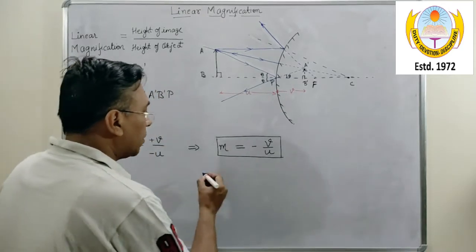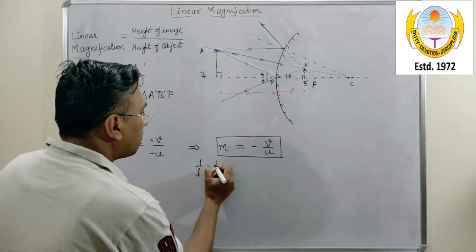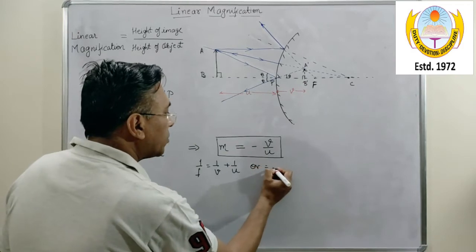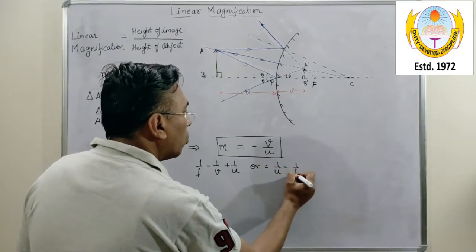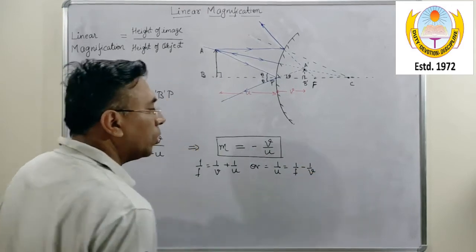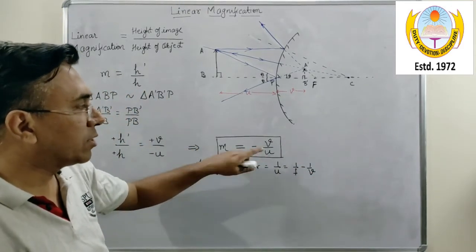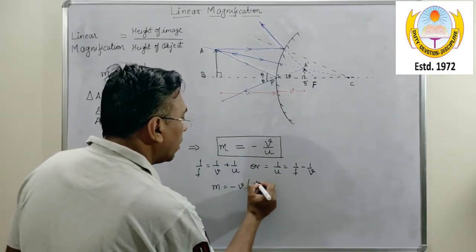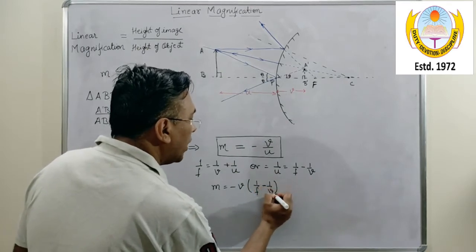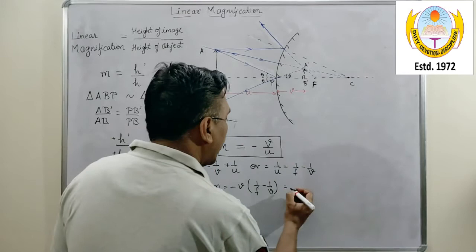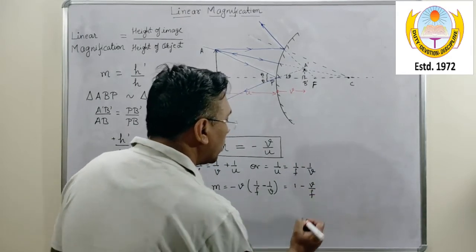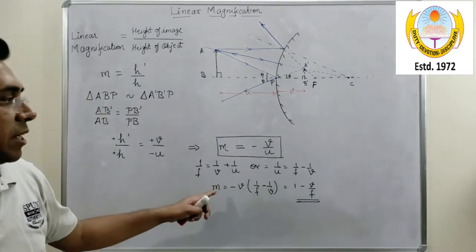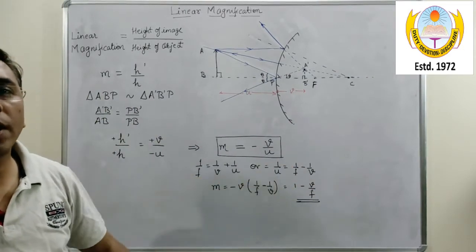Now we also know the mirror formula. The mirror formula says 1 upon F equals to 1 upon V plus 1 upon U, or I can write 1 upon U equals to 1 upon F minus 1 upon V. So if I substitute the value of 1 upon U in this expression, what I get is M equals to minus V times (1 upon F minus 1 upon V). Now when I multiply V inside I get 1 minus V upon F. So this is another formula which we have got for the magnification in terms of V as well as F.